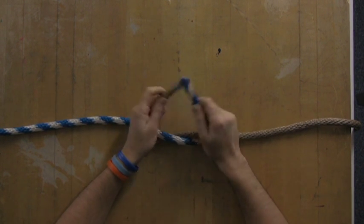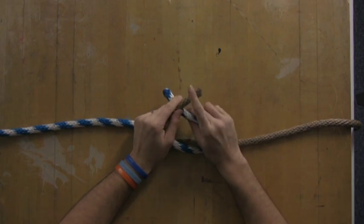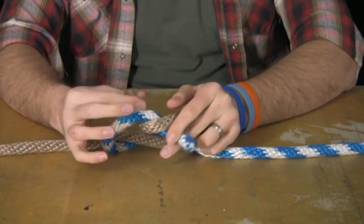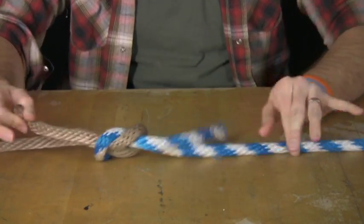Now I went right over left the first time, so I have to go left over right this time, once again using that hand to pull it through and pull it tight.